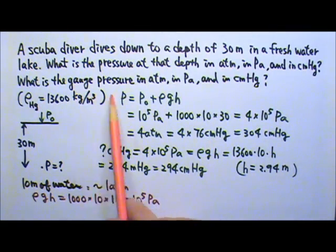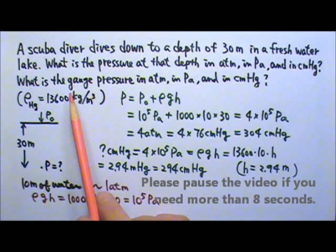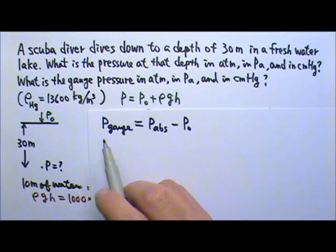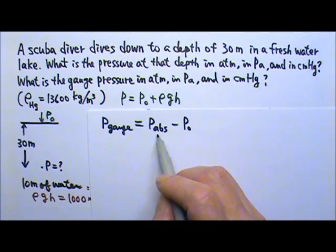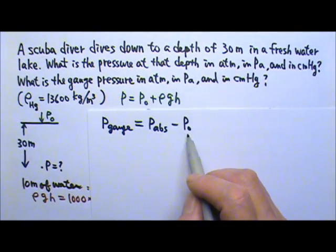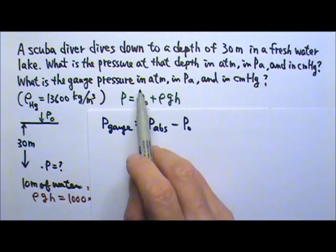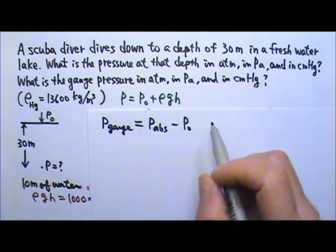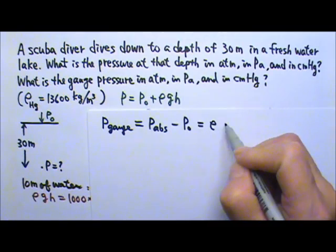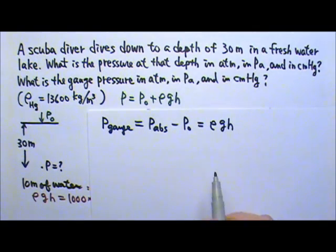How about gauge pressure? Gauge pressure is the absolute pressure minus the atmospheric pressure. So if you subtract the atmospheric pressure from the absolute pressure, we're going to get the pressure produced by the water only.